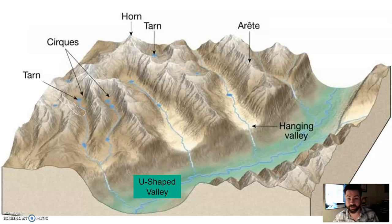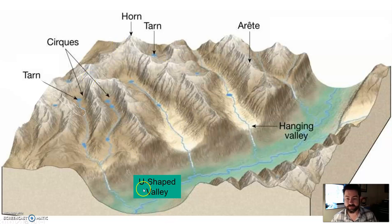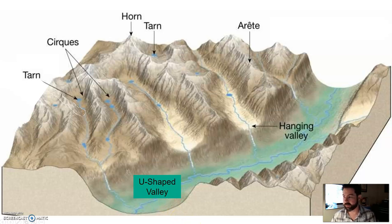Here's a diagram that illustrates some of those: cirques, horns, tarns, arêtes, and U-shaped valleys. The only thing not on this image are the striations.